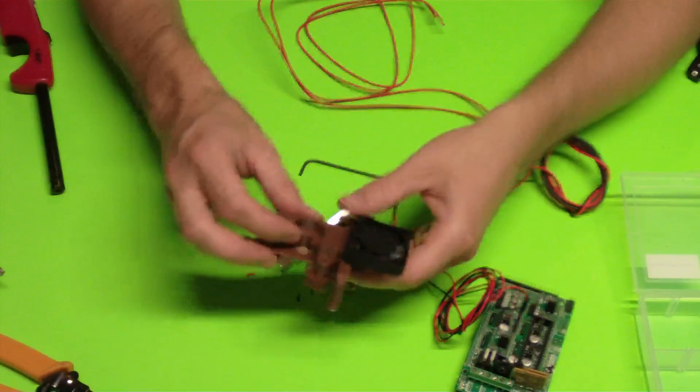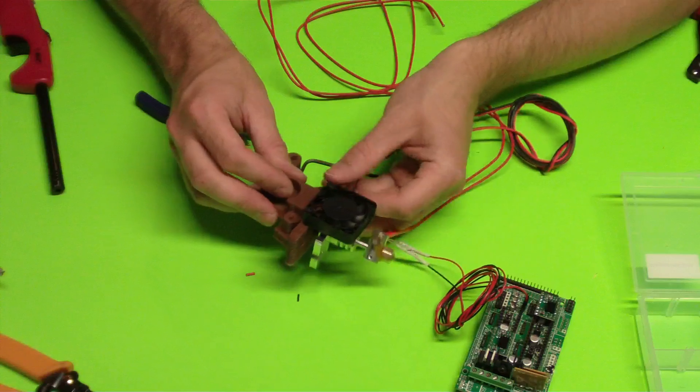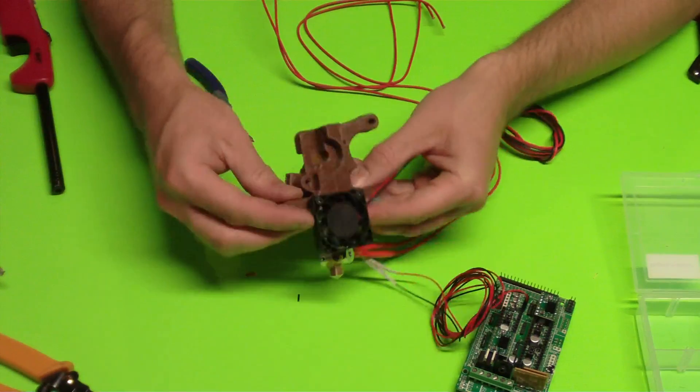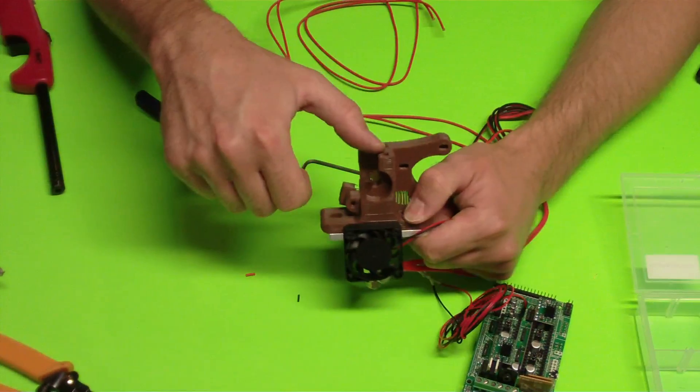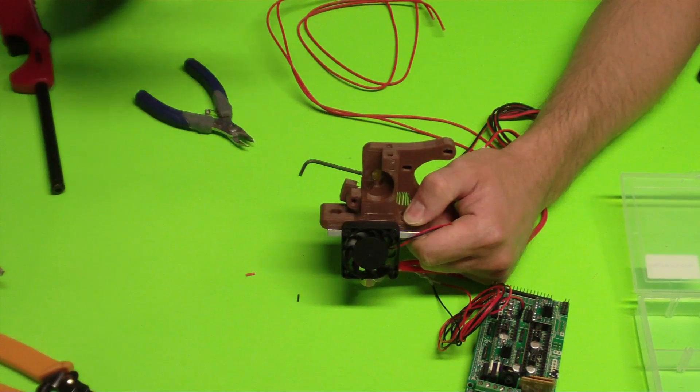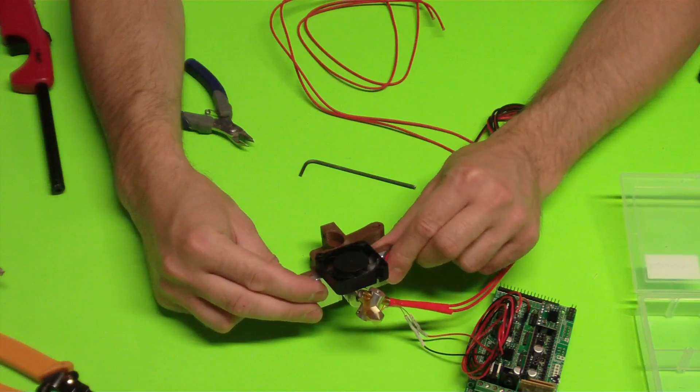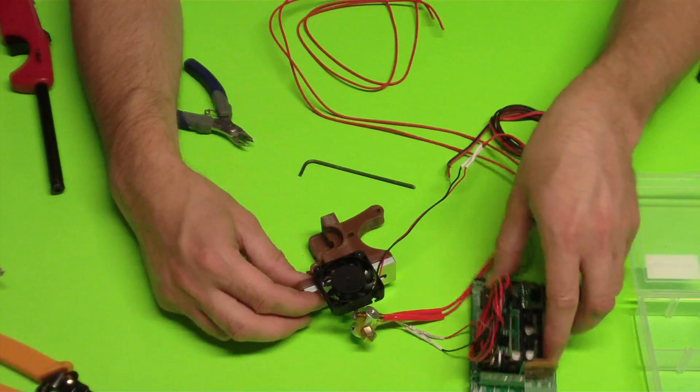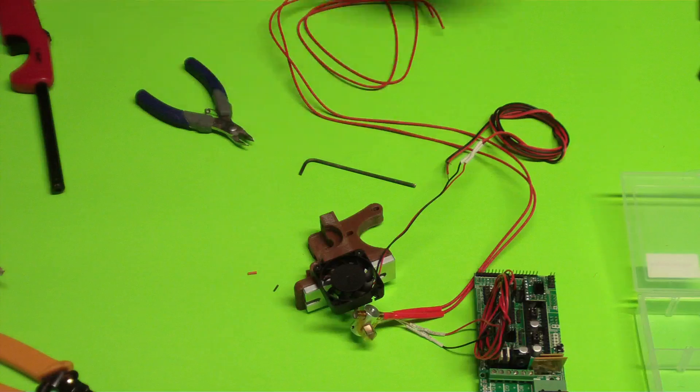If you do have jams in your hotend, it's not a big deal. Basically if it heats up, all you'll have to do is you'll pull back the little idler, pull your filament off, cut off the bottom 3 inches, and then just put it back in. That's all you have to do. It's really easy. So that should be everything.